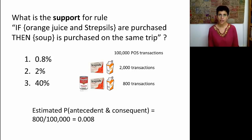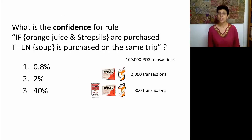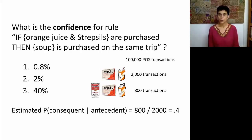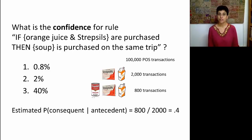Now let's look at the confidence of the rule: if orange juice and strep cells are purchased, then soup is purchased on the same trip. Confidence is a conditional probability — given that you see orange juice and strep cells, what is the probability that soup was also purchased? We look at the number of transactions with all three, which is 800, and divide it by the transactions with orange juice and strep cells, which is 2,000. That gives a confidence of 0.4, or 40%.